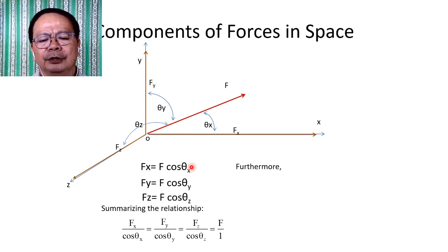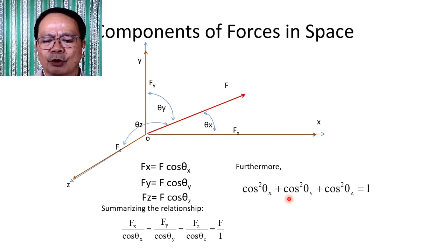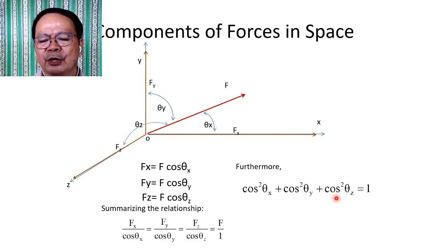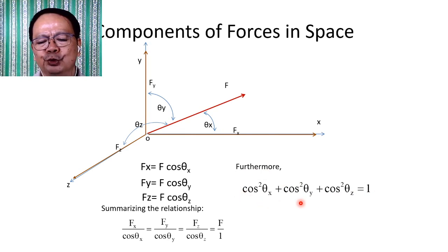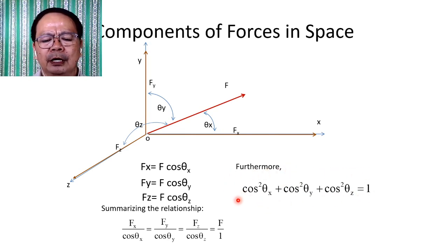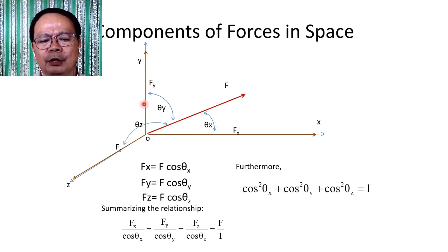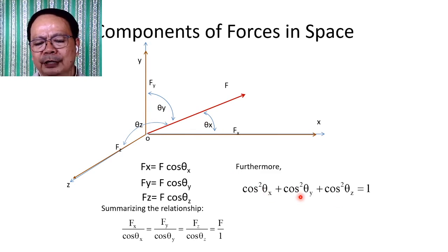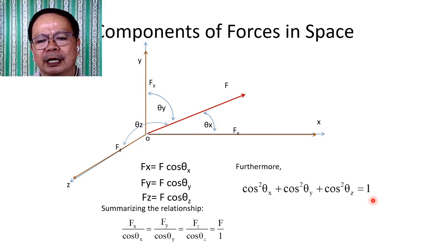Furthermore, between θ_x, θ_y, and θ_z, there exists the relationship: cos²(θ_x) + cos²(θ_y) + cos²(θ_z) = 1. This relationship is very useful because there are instances where the direction of the force is given in terms of at least two angles with respect to the X, Y, or Z-axis. Whenever you are given at least two angles, the third angle can be computed using this relationship.